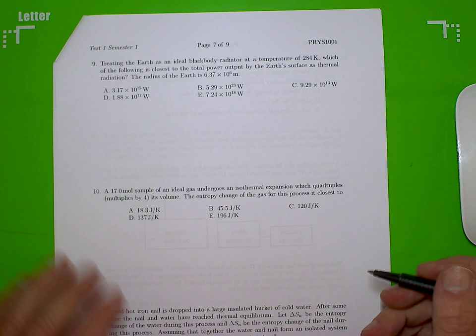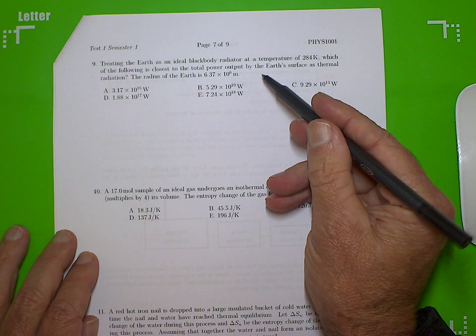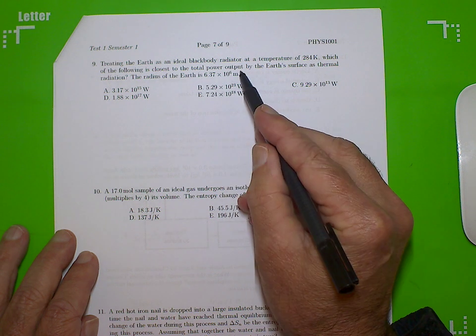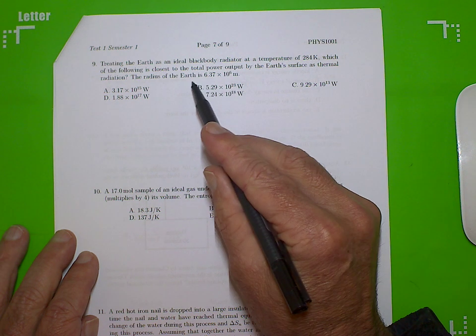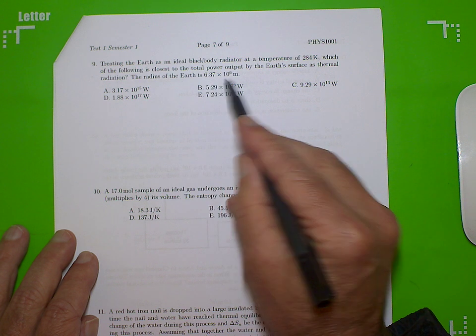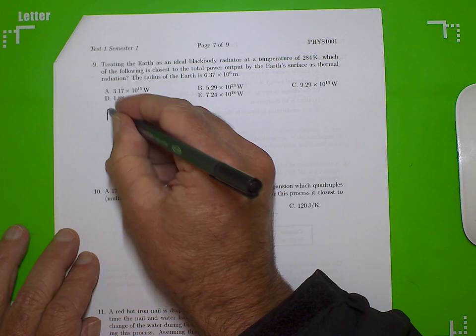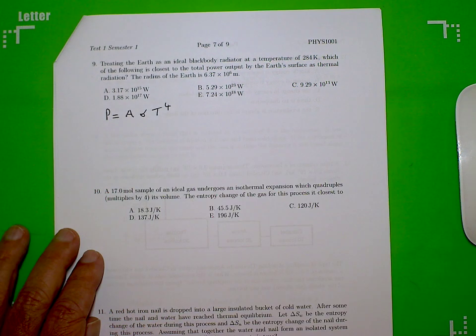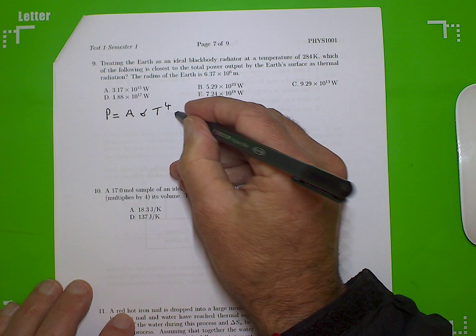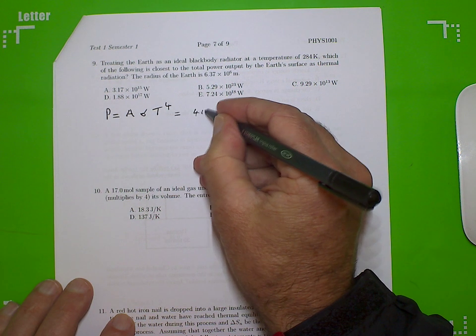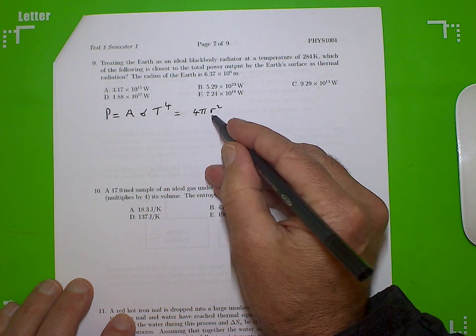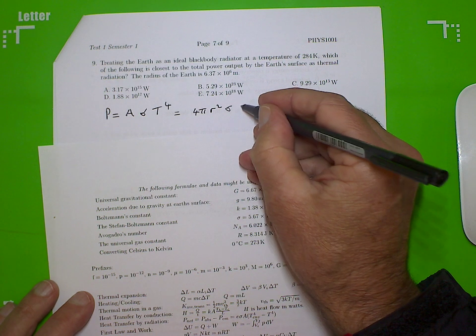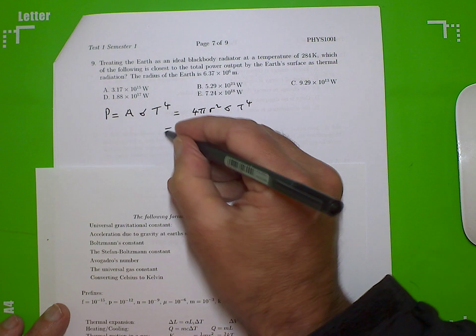Now for a nice, relatively easy one, we're going to treat the Earth as an ideal blackbody radiator at a temperature of 284 K. And which of the following is closest to the total power output by the Earth's surface as thermal radiation? The radius of the Earth is blah blah blah. Well, we know that power output is going to be the area times sigma T to the fourth. And so this is going to be, the area is going to be 4 pi R squared, for the radius of the Earth, times sigma T to the fourth.